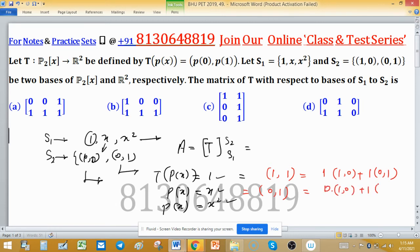So this is 0·(1,0) + 1·(0,1). The last one is x², so P(0) = 0 and P(1) = 1. Again this is 0·(1,0) + 1·(0,1). The coefficients of this linear combination become the columns.